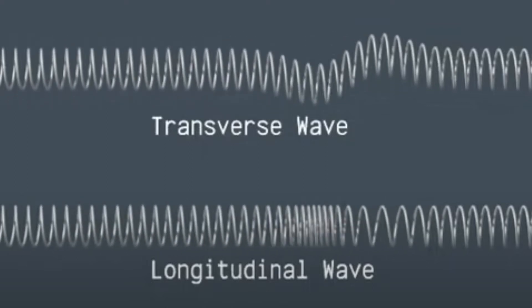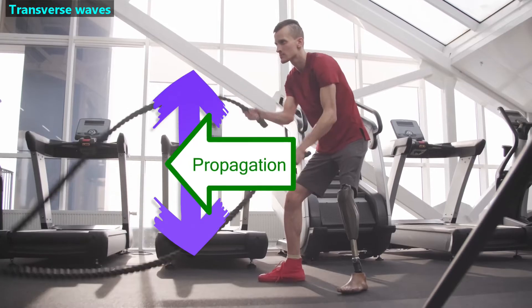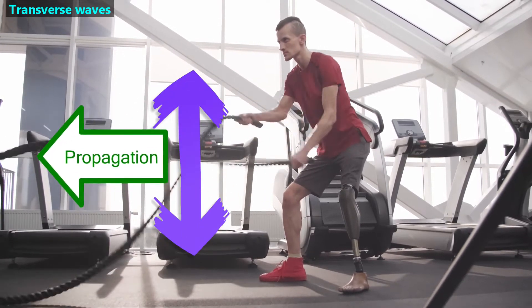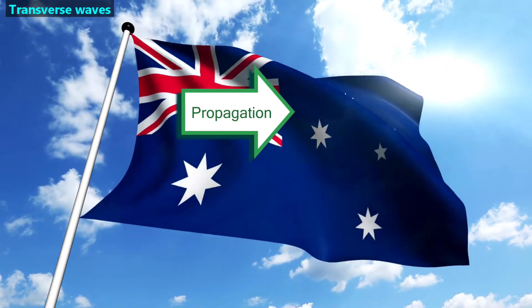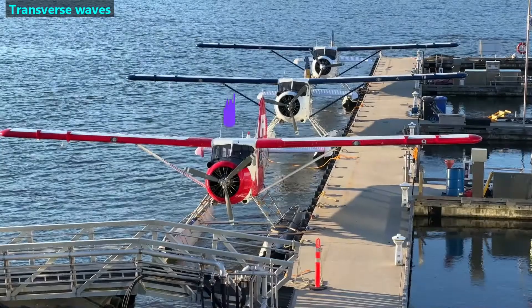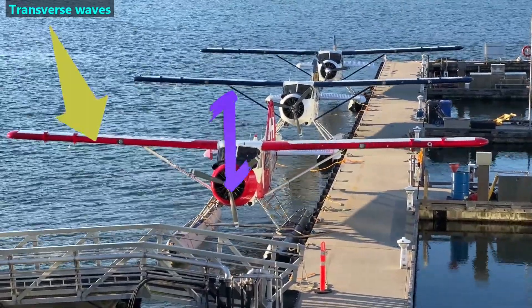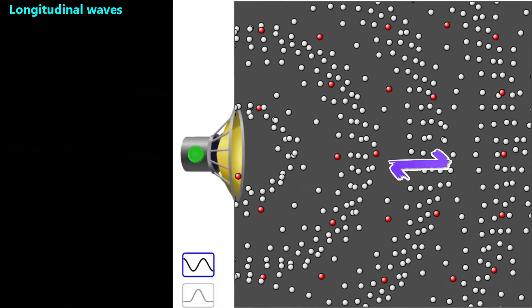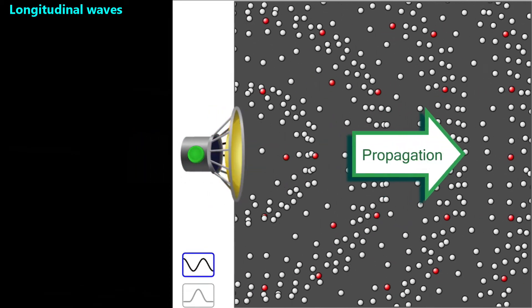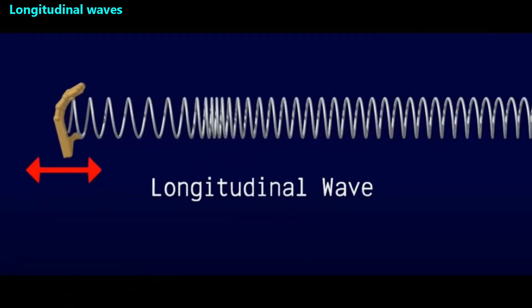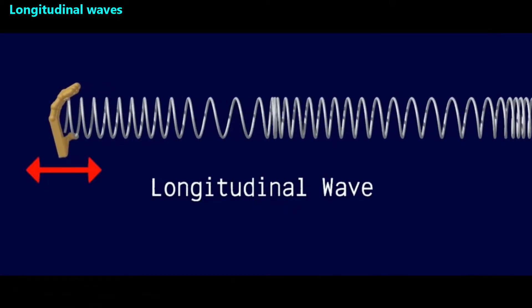Next, we'll introduce transverse and longitudinal waves. Transverse waves oscillate the physical medium in a direction perpendicular to the direction of propagation. This flag is oscillating towards and away from us in the y-axis, but the waves are propagating in the x-axis towards the right, so these are transverse waves. In contrast, longitudinal waves oscillate the physical medium in a direction parallel to the wave propagation. Sound waves are the classic example of longitudinal waves — sometimes called compression waves — because we see areas of compression surrounded by areas of rarefaction. In this spring, the oscillations are in the x-axis and the wave propagation is also in the x-axis, so these are longitudinal waves.